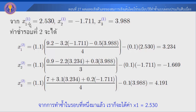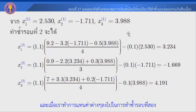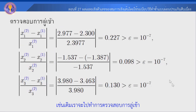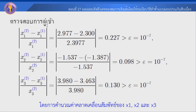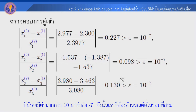In the 1st iteration, we get x1 = 2.530, x2 = 1.711, x3 = 3.988. We note that the true solution values are x1=10, x2=7 approximately. We need to do a 2nd iteration. We check x1, x2, x3 and notice the value of x1 is not yet equal to the true value, so we continue.